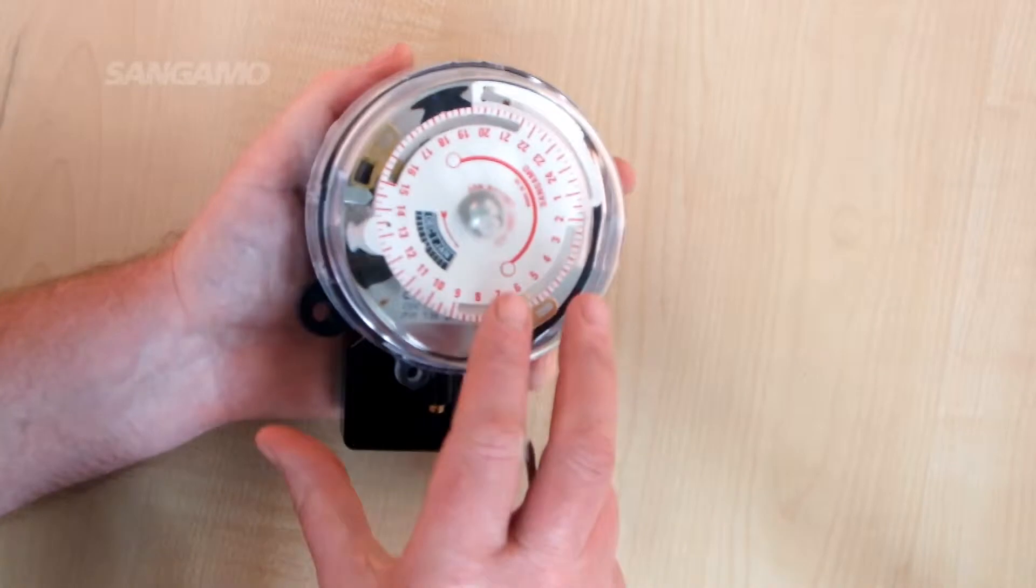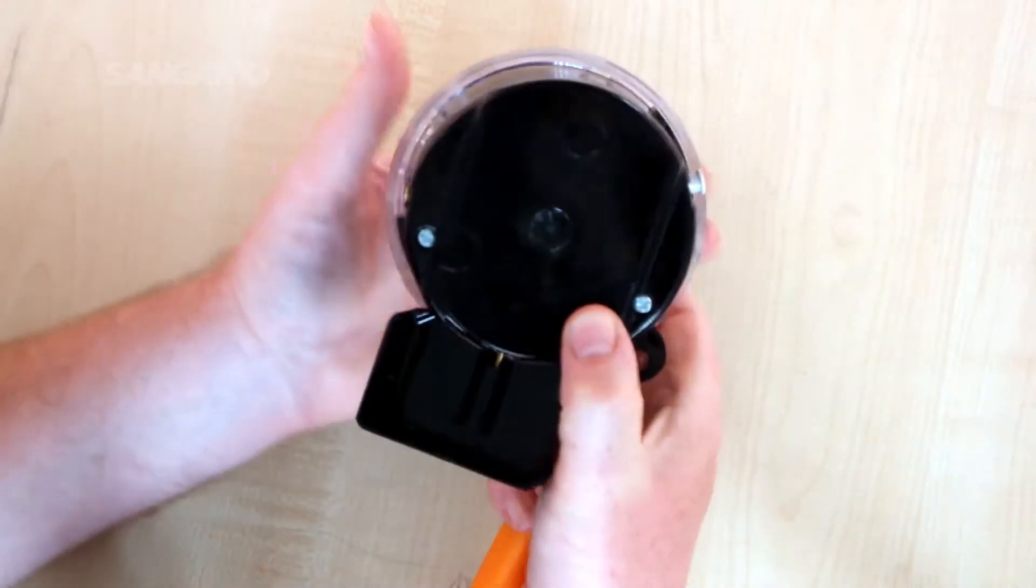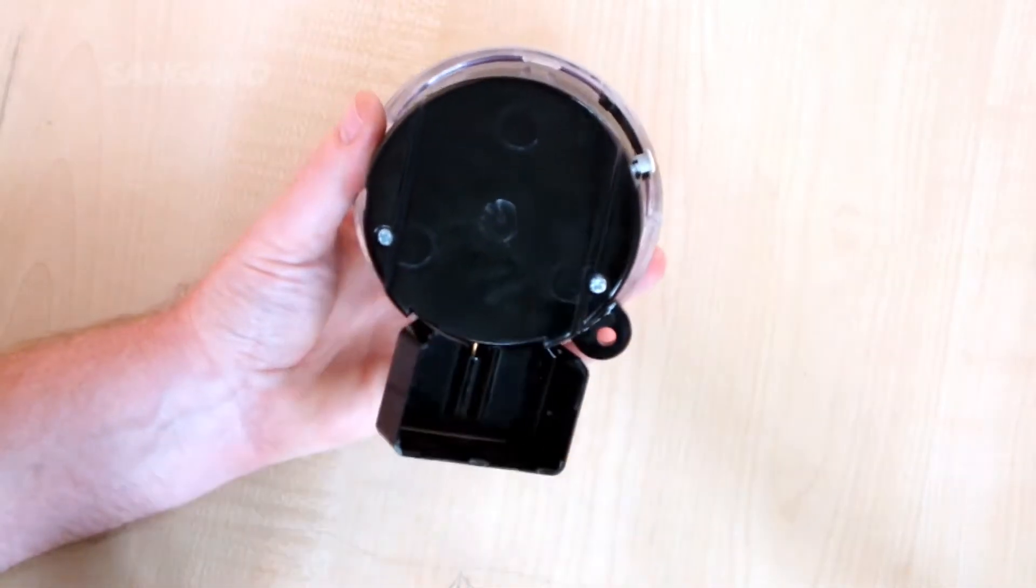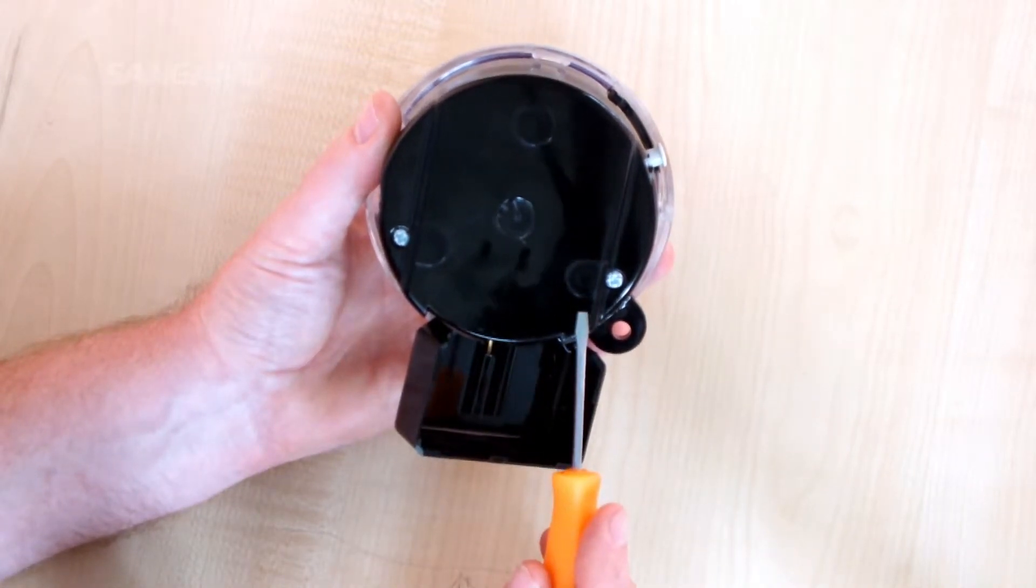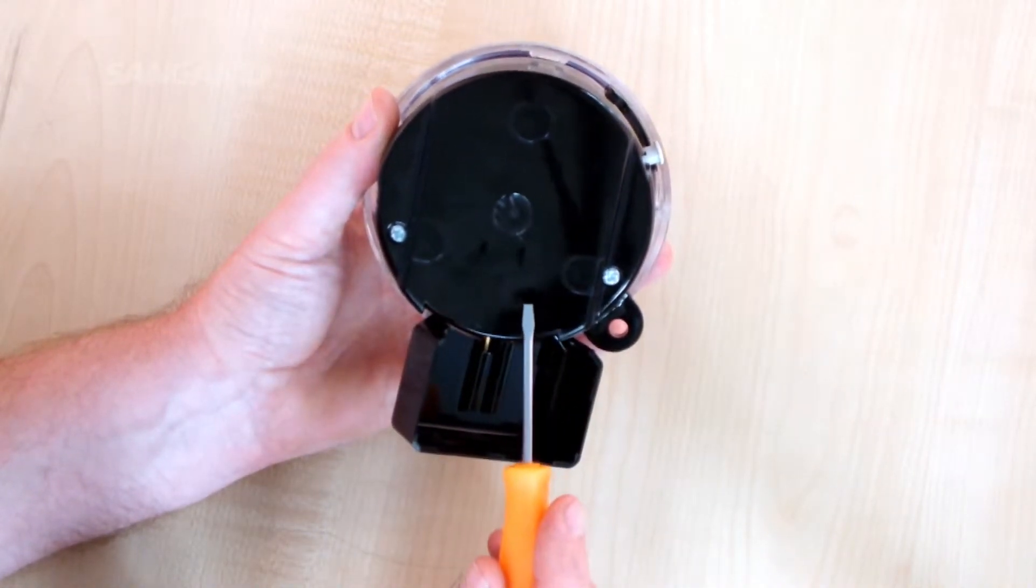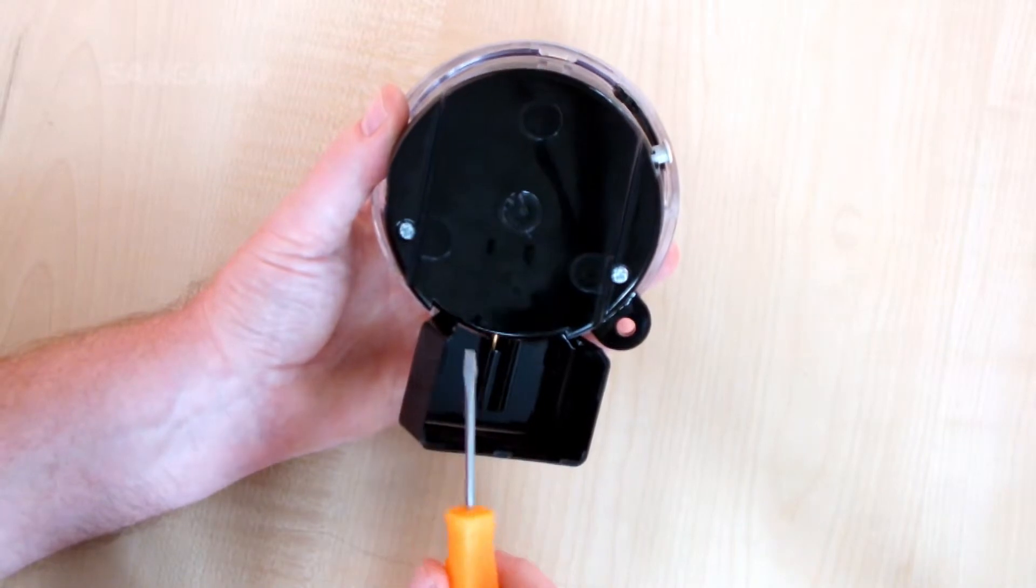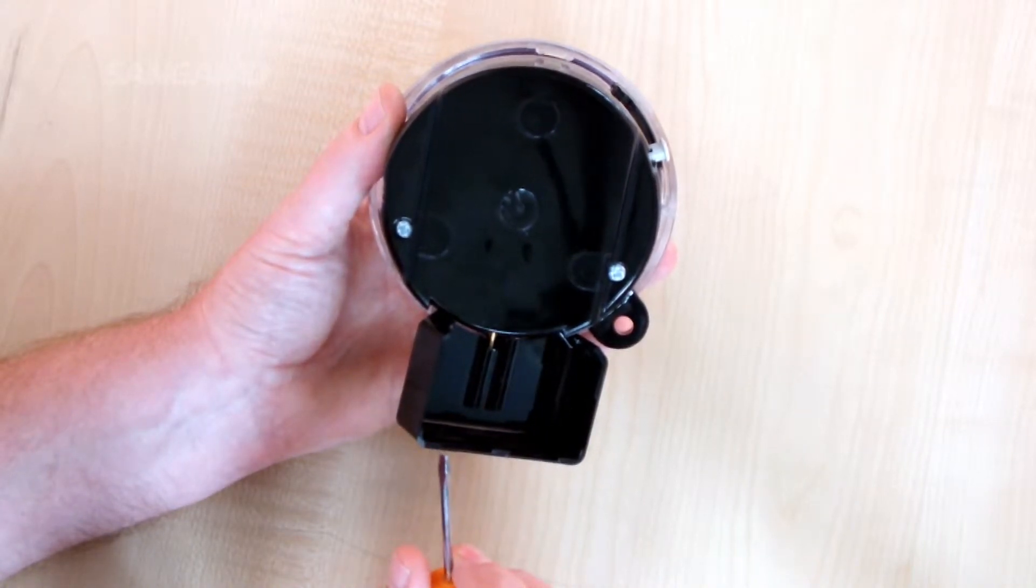Once the product is removed from its box, a key thing to note is on the back of the base there are two screws. These should not be removed. These are for Sangamo assembly purposes only.